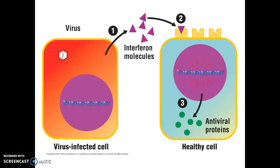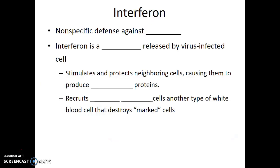Interferon is a communication molecule released by cells when they detect they've been infected by a virus. It doesn't matter what virus it is or what signature molecules are on that virus — if a cell knows it's been infected, it releases interferon. Interferon does a few things: it lets neighboring healthy cells know that viruses are in the area so they start making antiviral proteins to defend themselves, and it also attracts NK cells. So interferon is a nonspecific defense against viruses, released by virus-infected cells, stimulating and protecting neighboring cells.